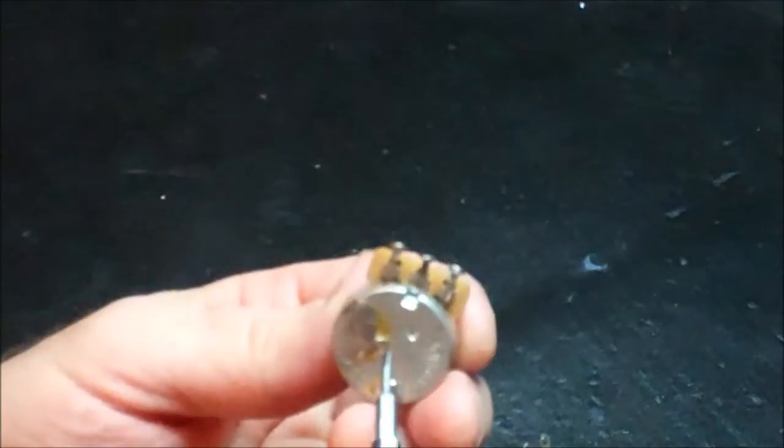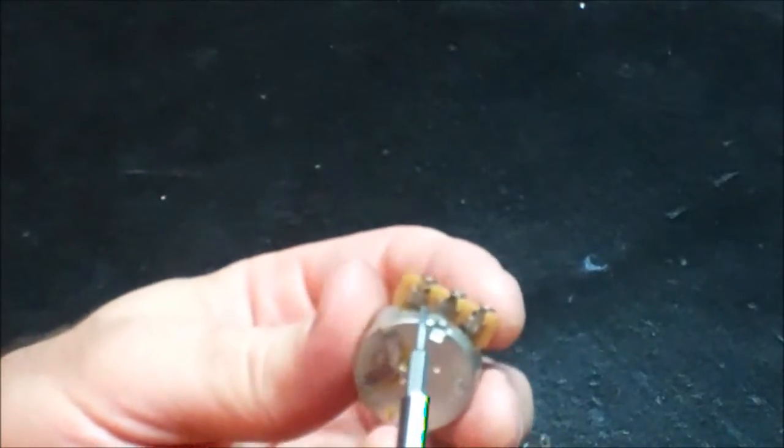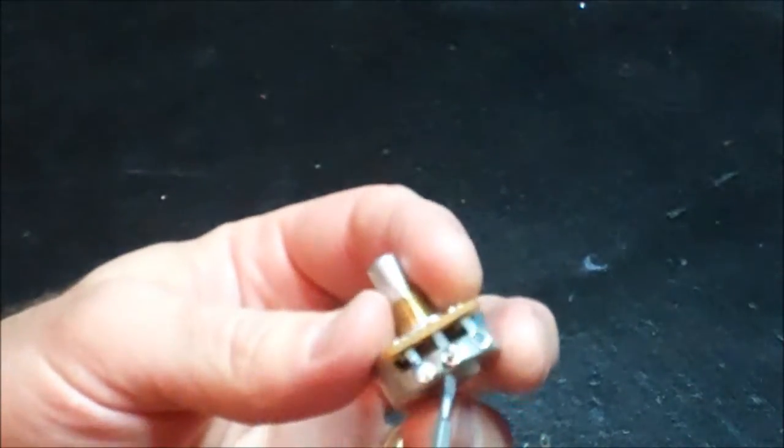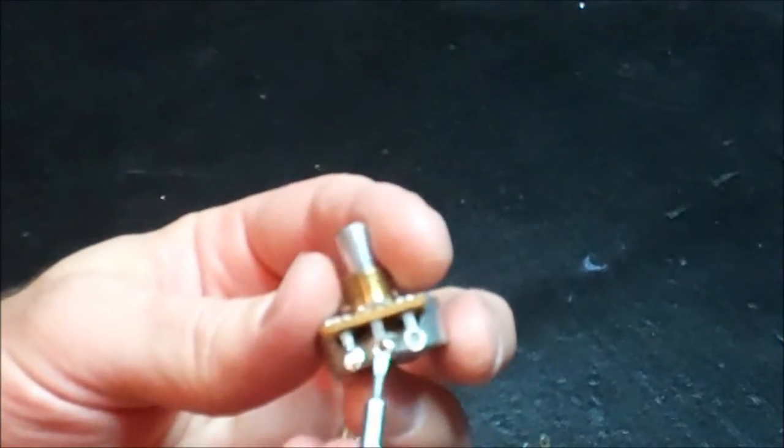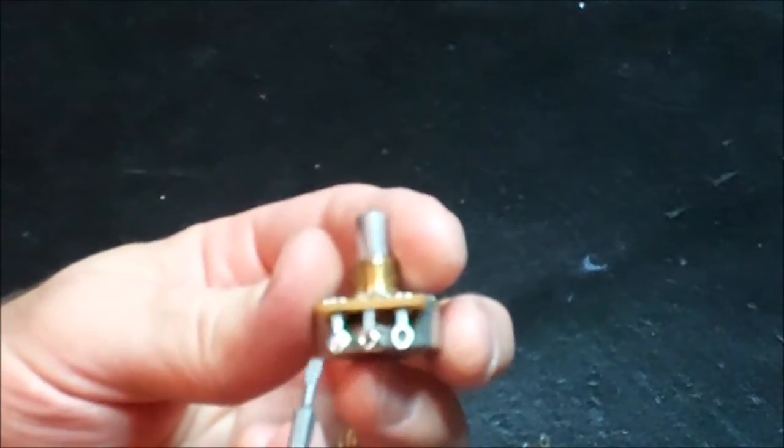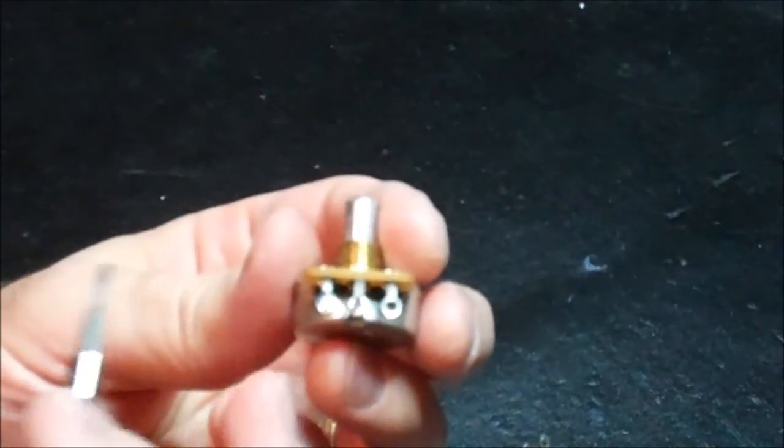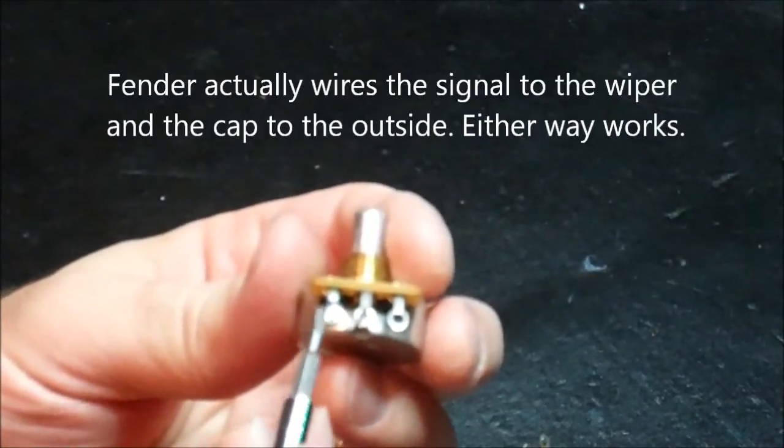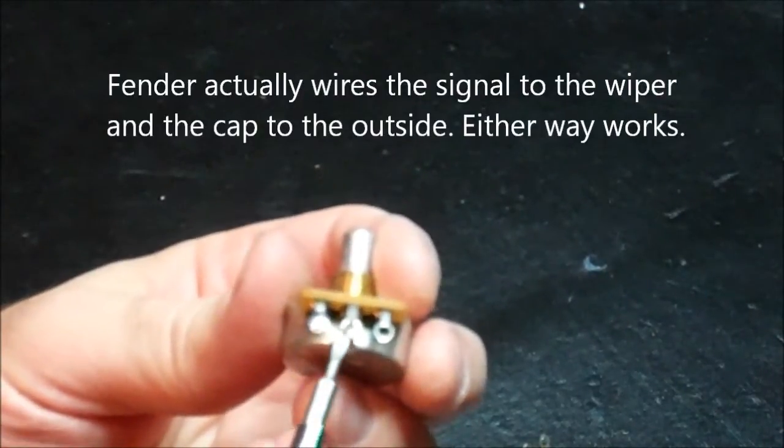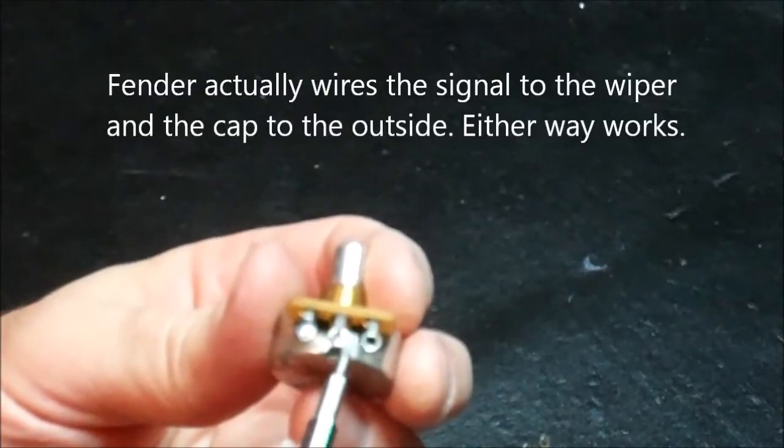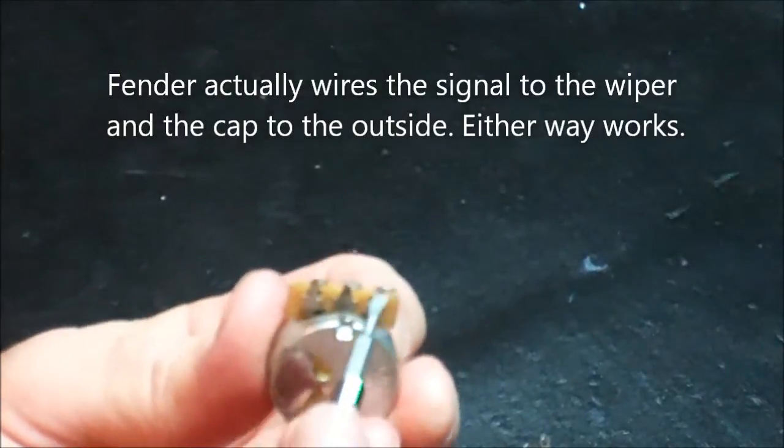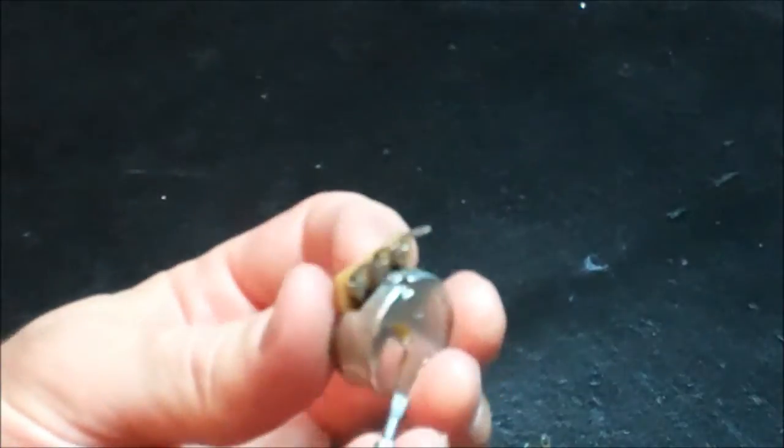But essentially, you're not going to use all three terminals. You're only going to use this end and the center. And you're going to take your signal that you want to connect the tone control to, connect it to the outside, and then you'll connect a cap from the center to ground. Normally, it'll just get soldered onto the body of this pot.